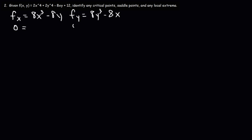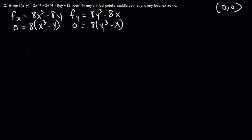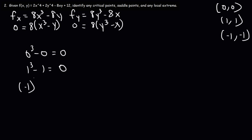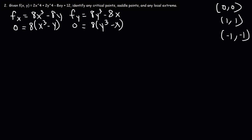Now we're going to set each of these two partial derivatives equal to 0. Factoring out an 8, we get x cubed minus y on the left and y cubed minus x on the right. The points of interest are (0, 0): plugging 0 into x cubed minus y gives 0, and the same is true for y cubed minus x. The next point of interest is (1, 1): when x is 1 and y is 1, both f sub x and f sub y will be 0. And the other point of interest is negative 1, negative 1: when x and y are both negative 1, f sub x and f sub y will both be 0. So those are the three points of interest for this problem.